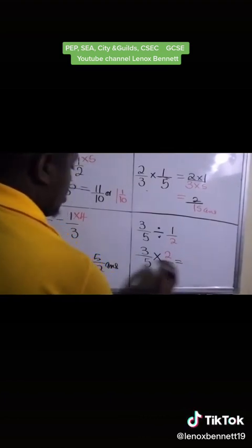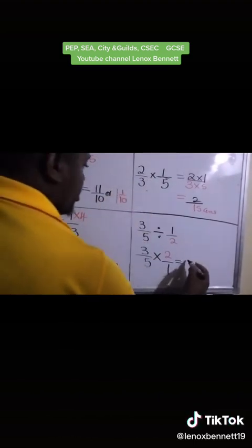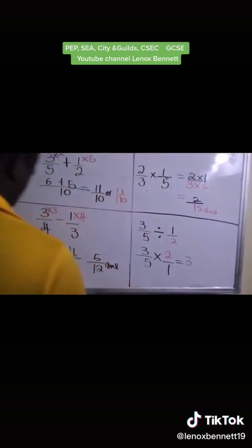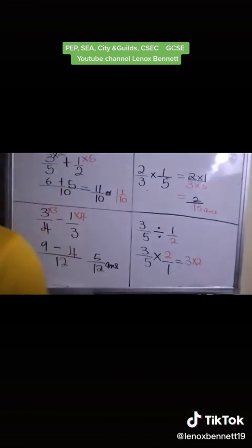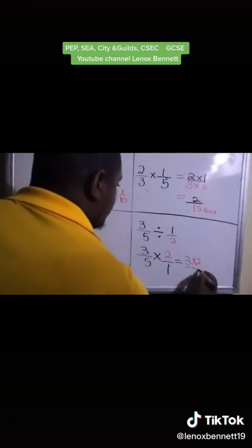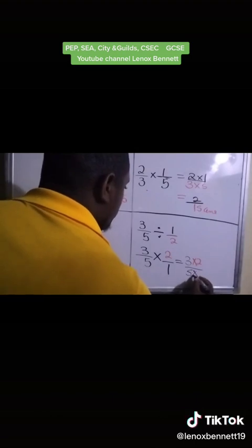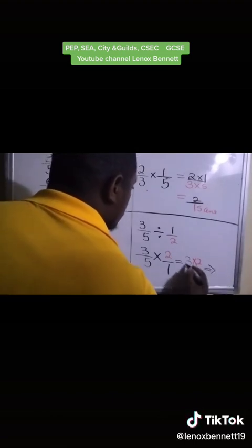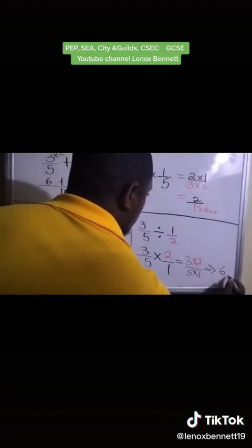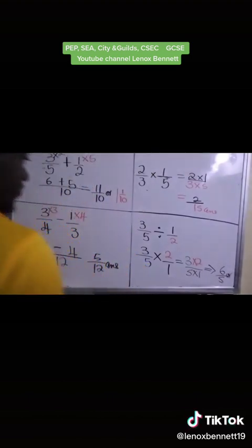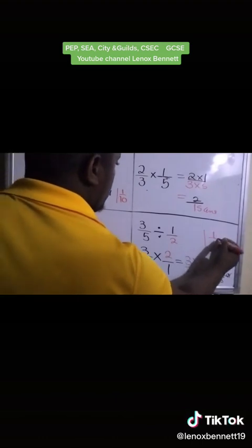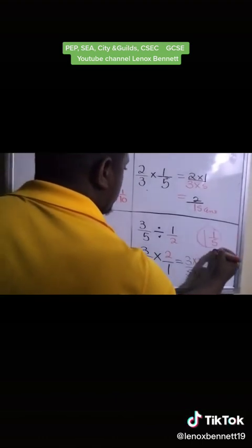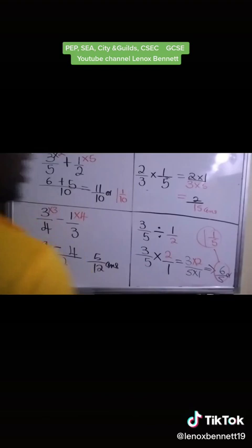So now we can go back to this rule that we say numerator by numerator and denominator by denominator. So that's 5 multiplied by 1. So 3 times 2 is 6 over 5. Or we can say 5 into 6, that goes 1 time and remainder 1 over 5. So both of these are the answers.